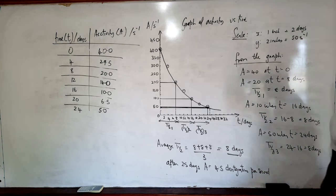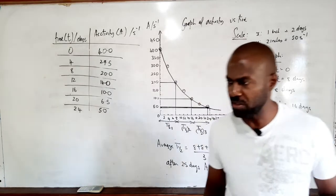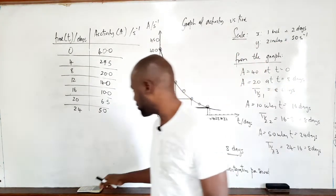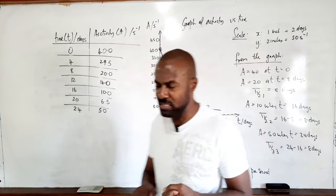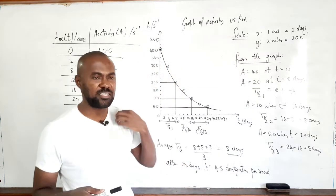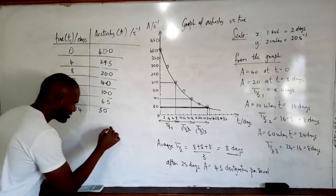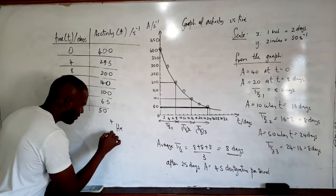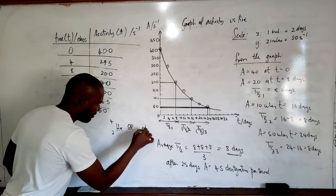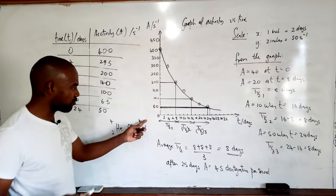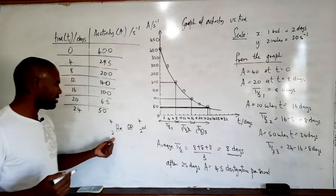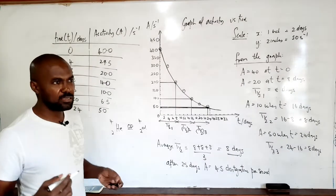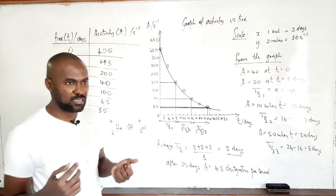Part D says: state two types of radioactive emissions. We'll list all three. First, alpha particle emission — alpha particles are helium nuclei, represented as He-4-2 or α-4-2. The alpha particle is a helium nucleus, meaning it has protons and neutrons but no electrons.